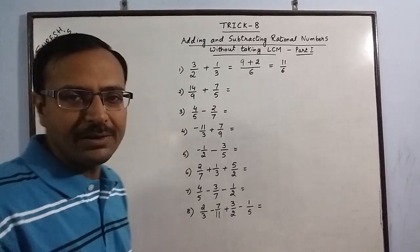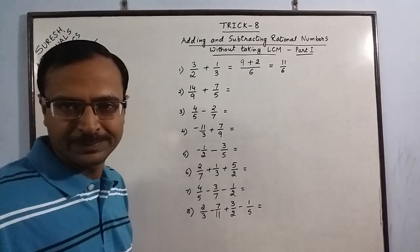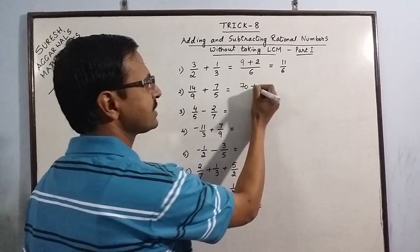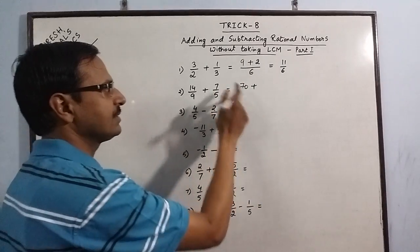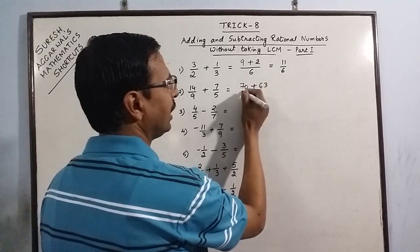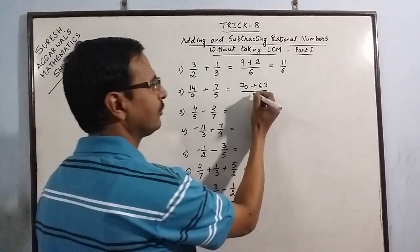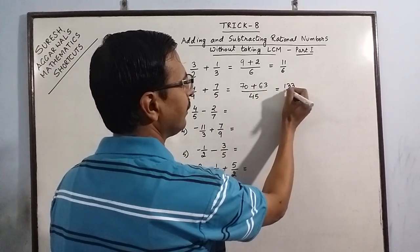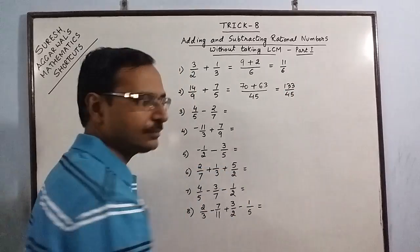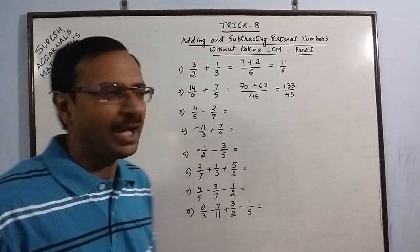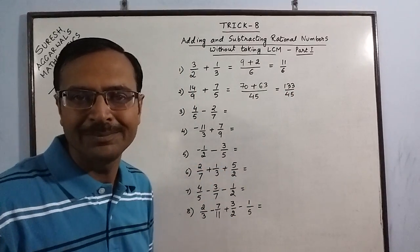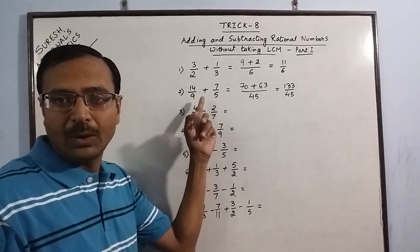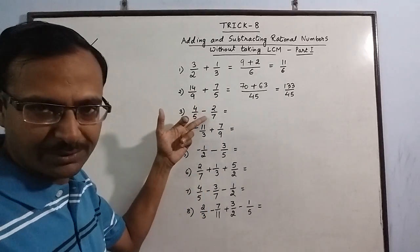A similar method when applied to 14/5 plus 9/7: 5 times 14 is 70, 7 times 9 is 63, denominator is 9 times 5 which is 45, so the total is 133/45. Isn't that simple? It consumes only 3 seconds.